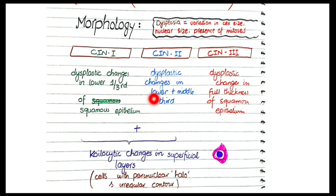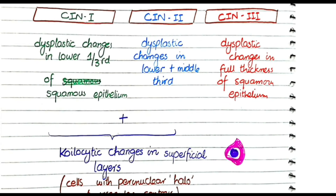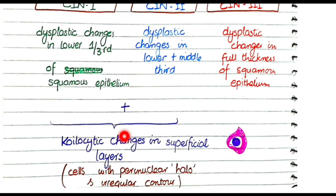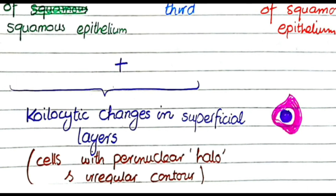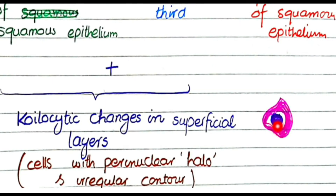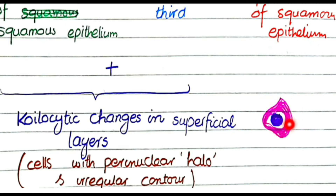There is another important point. In CIN 1 and CIN 2, when the lower layers show dysplastic changes, what happens to the superficial layers? The superficial layers show koilocytic change. Koilocytic change is a cytological abnormality that develops in cells infected with human papillomavirus. It appears as a perinuclear halo — a clear zone of cytoplasm surrounding the nucleus, also called perinuclear vacuolization. Another feature of koilocytic change is an increase in cell size.